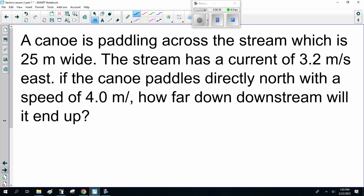A canoe is paddling across the stream, which is 25 meters wide. The stream has a current of 3.2 meters a second east. If the canoe paddles directly north with a speed of 4 meters per second, how far downstream will it end up? So, this is actually a navigation question. It's a warm-up to the next lesson. So, you're going... Okay, so current... So, the river's going east, 3.2 meters a second. And you're heading north, directly across, at 4 meters a second.